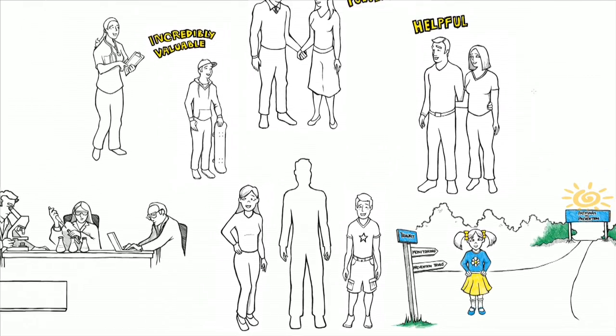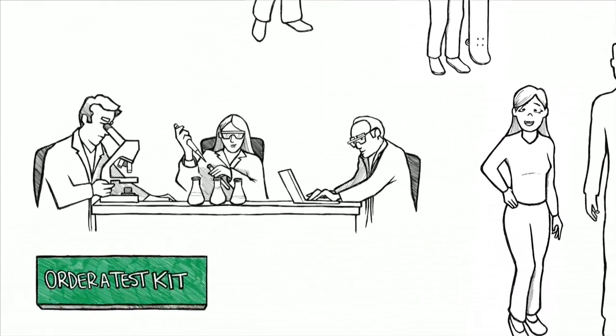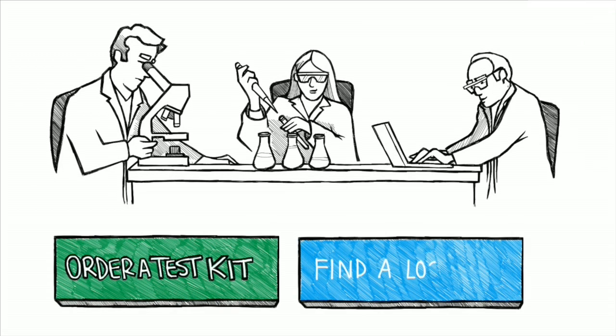To order a test kit by mail, click the green button. If you'd prefer to have the test done at a TrialNet location, click the blue button. You can choose to be referred to a study site in your area or request to have someone from TrialNet call you.